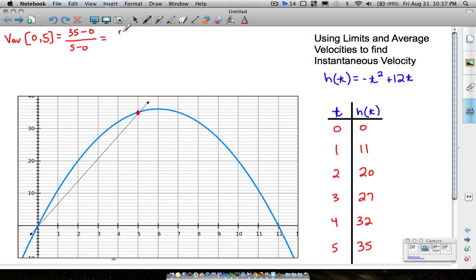Solving this we get 7, 35 minus 0 is 35, divided by 5 we get 7 feet per second. So that's the average velocity. And it makes sense to me, if the ball or whatever object it may be reaches a height of 35 feet in 5 seconds, on average it's going 7 feet every second.